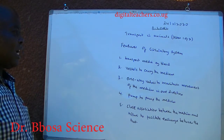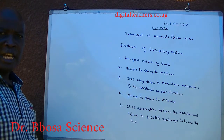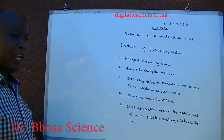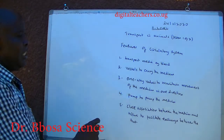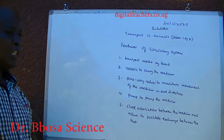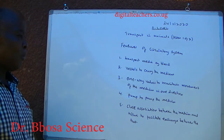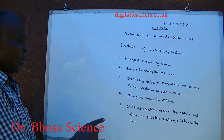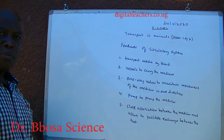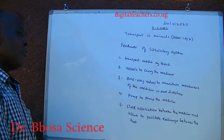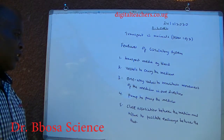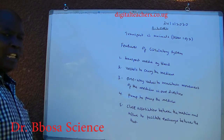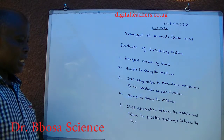It requires a transport media, for example blood. Vessels to carry the media. 3. One-way valves to maintain movement of the media in one direction. 4. A pump to pump the media. 5. Close association between the media and the tissue to facilitate exchange between the two.